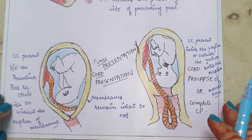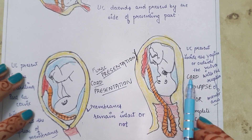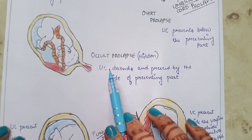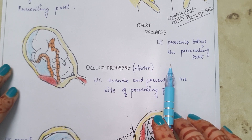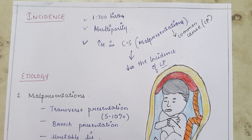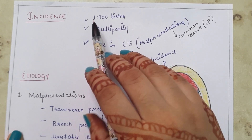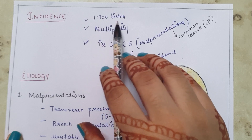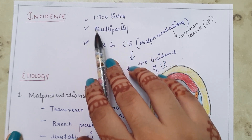To summarize, there are four types: cord presentation, cord prolapse (complete cord prolapse), occult prolapse, and overt prolapse. The incidence of cord prolapse is 1 in 300 births — among 300 births, there is a chance of only one case of cord prolapse.